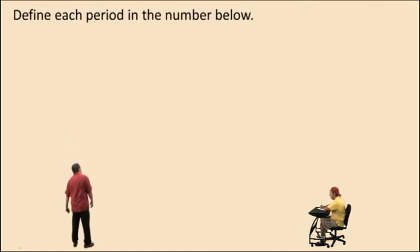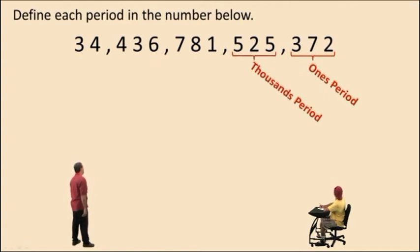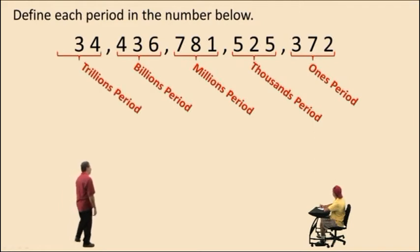All right, Charlie, so let's talk about the periods. Let's define each period in the number right there. The first period is called the ones period. Then we have the thousands period. Then we have the millions period. Then we have the billions period. And after that becomes the trillions period, right?